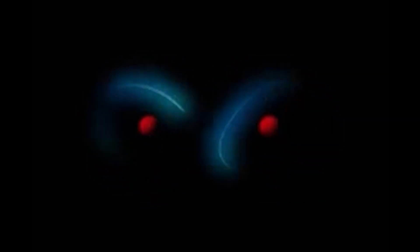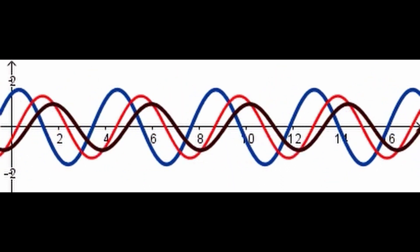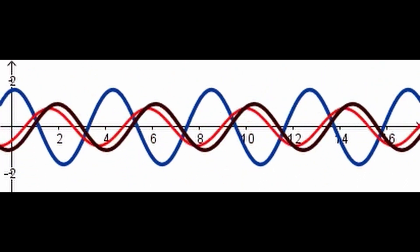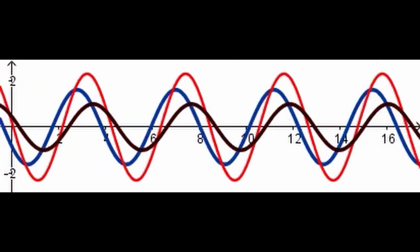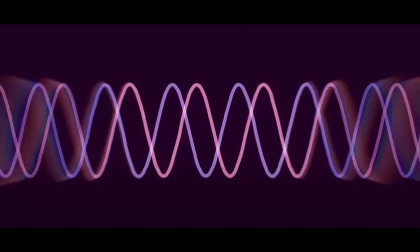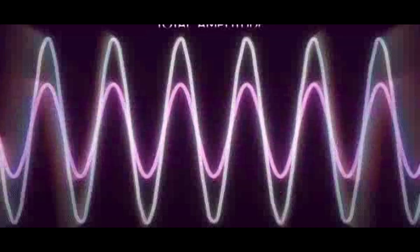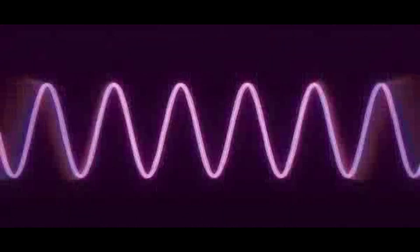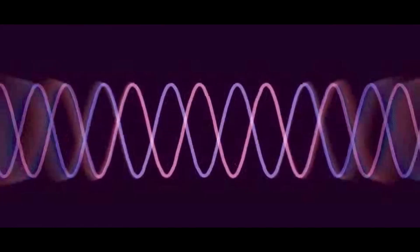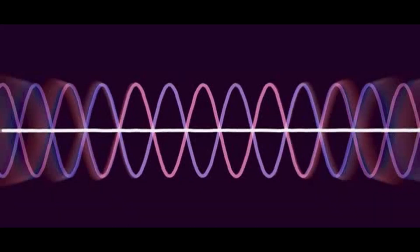The existence of the mass jump is a consequence of the mathematical structure of Yang-Mills theory. It is related to the fact that the theory predicts the existence of particles that are strongly coupled to the fields that describe them. These particles are difficult to study experimentally, but their existence is important for understanding the behavior of fundamental particles and their interactions. The mass gap and the mass jump are important features of the theory, related to particles with a certain mass that have not yet been observed experimentally, and understanding these structures is important for advancing our knowledge of fundamental physics.